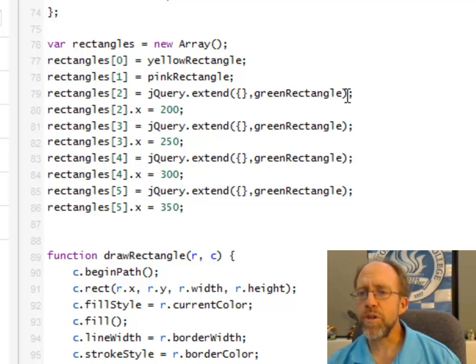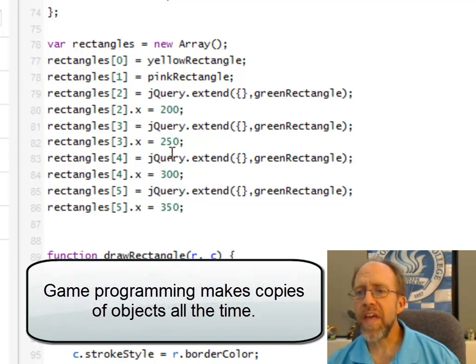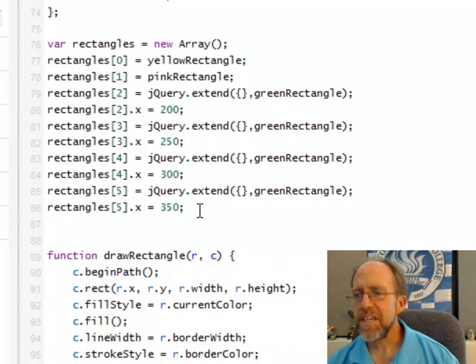And so, I was able to, when I created these green rectangles, all I did was take the green rectangle, which had defined properties, and I reset the X in each case to different values, so that the rectangle started at a different point. Okay,